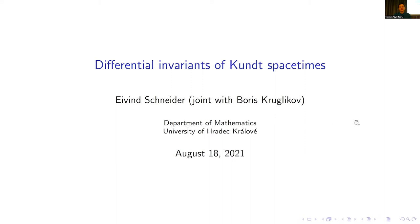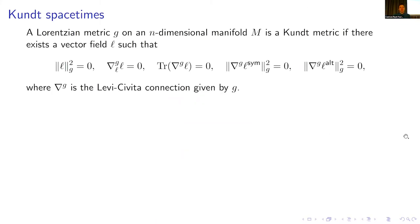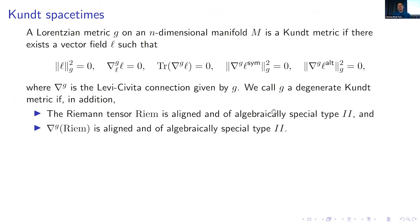This is based on a joint paper with Boris Kruglikov. A Lorentzian metric G on an n-dimensional manifold is a Kundt metric if there exists a vector field L satisfying these equations here. If, in addition, the Riemann tensor is aligned and of algebraically special type 2, and the covariant derivative of the Riemann tensor is aligned and of algebraically special type 2, then we call it a degenerate Kundt metric.